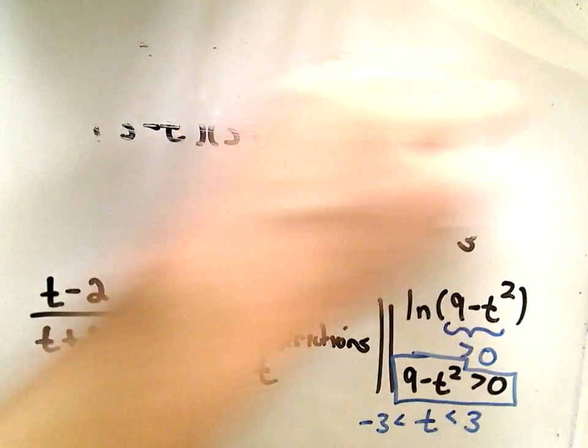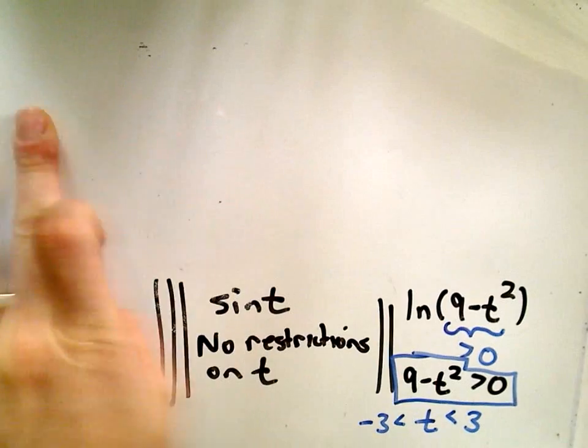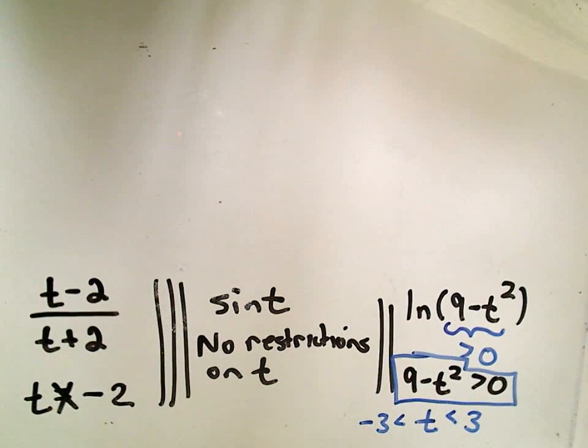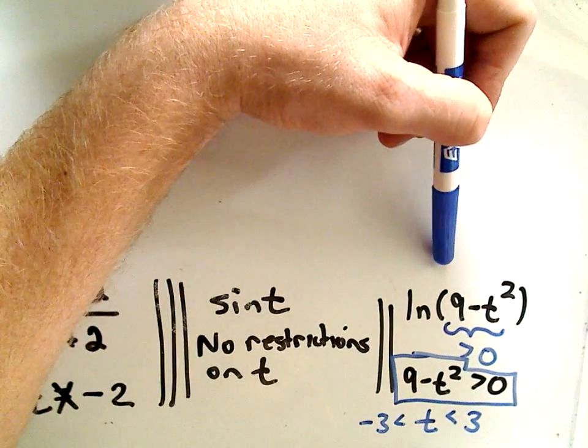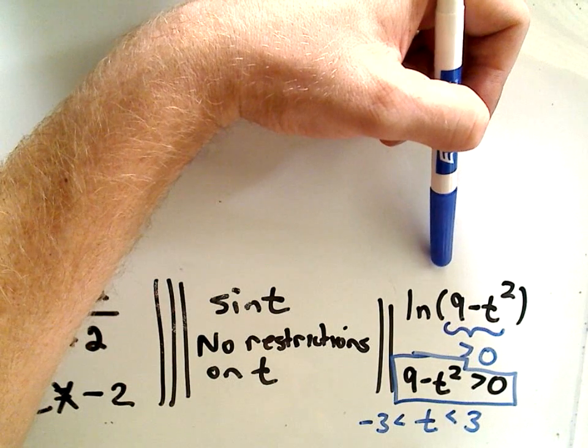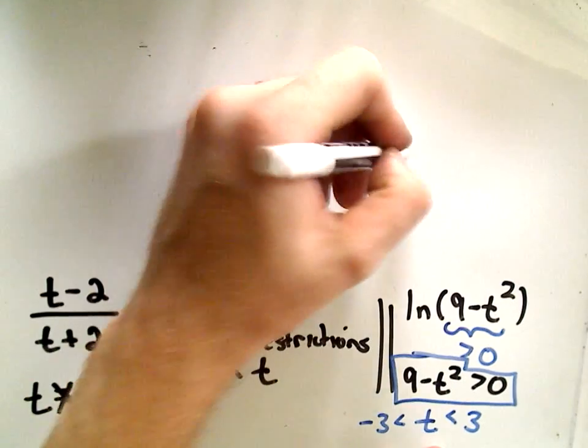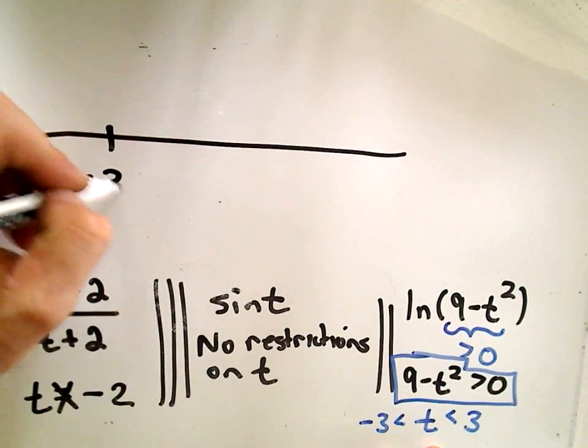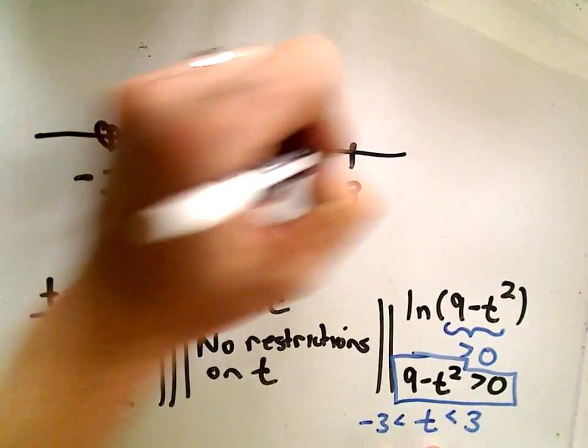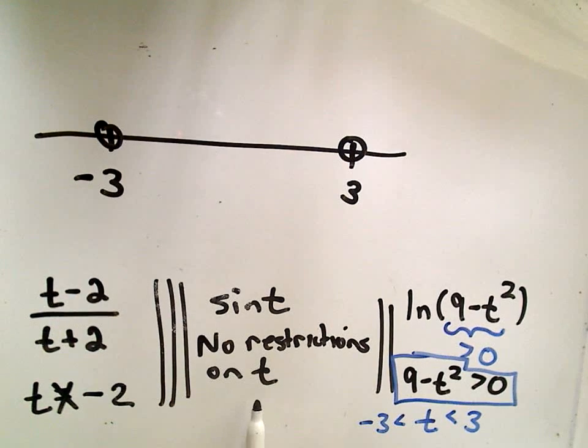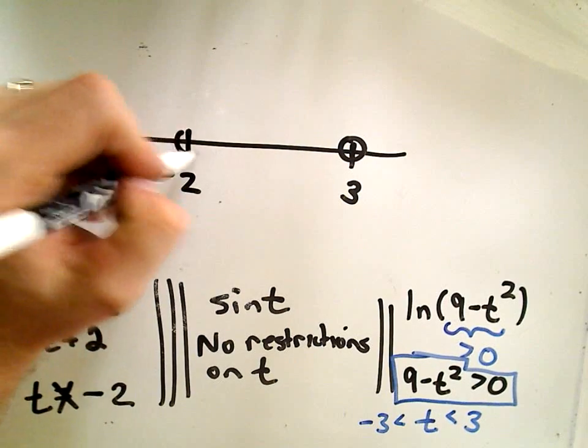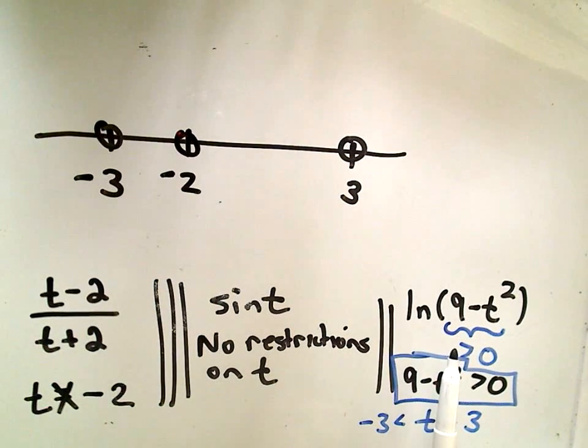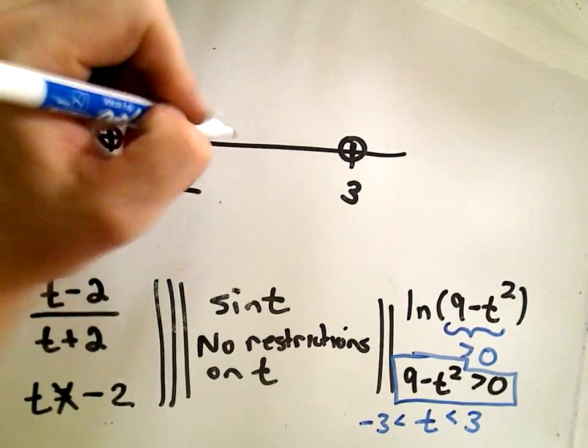So let's look at all of our restrictions. To make the last part work, to get something that will not be undefined for the natural logarithm, we have to use stuff between negative 3 and positive 3. For the sine part, there's no restrictions on t, but for the first part, remember we can't use t equals negative 2. Negative 2 doesn't mess up the natural logarithm, but it will mess up the first part. So everything else left over is gonna be the domain of this vector function.